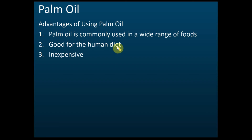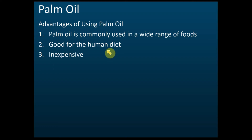Palm oil is good for the human diet because it is a saturated fat. Animal fat and animal oil are also saturated, and palm oil is also saturated. However, in the SBM book they mention that saturated fat is not good for health because saturated fat has a higher melting point, meaning it can form solids easily in your bloodstream.